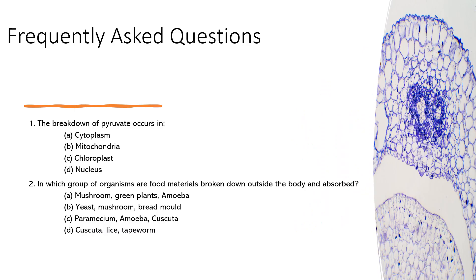Today we will start by exploring the cellular respiration process. The breakdown of a pile of weight takes place in one specific cellular compartment. Can you guess where? Yes, it happens in the mitochondria. The correct answer for question number one is option C, mitochondria.